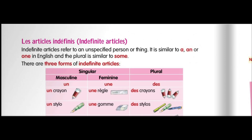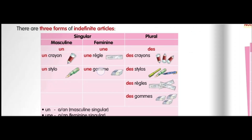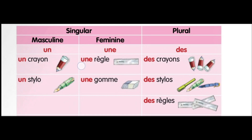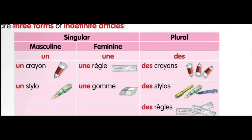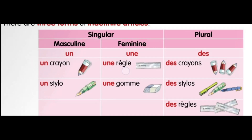In French we study indefinite articles and they also have a division into two segments: singular and plural. In singular we use different indefinite articles, and singular is further divided into masculine and feminine. The masculine indefinite article is 'un' and the feminine is 'une'. Note that 'un' is also the spelling of 'one' in French.